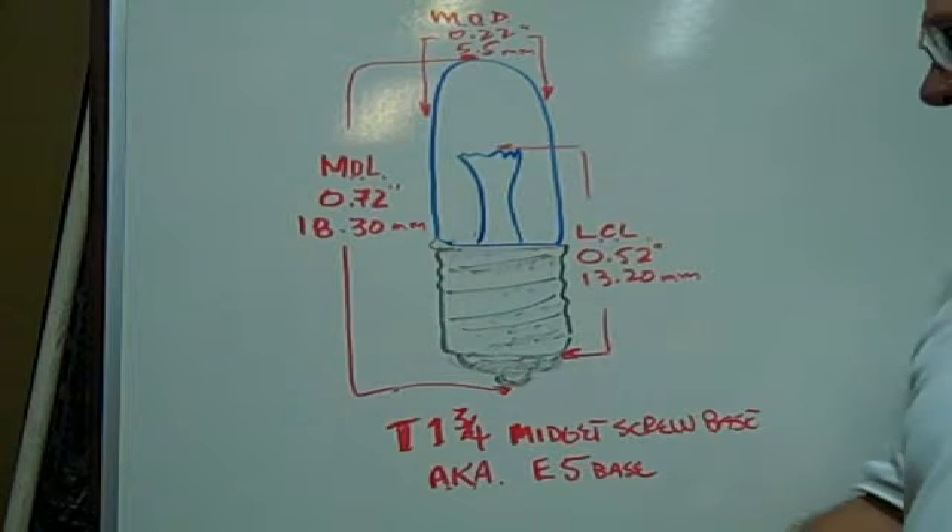The T1 3.25 midget screw base bulb, also known as an E5 base miniature bulb, has a maximum overall length of 0.72 inches or 18.30 millimeters. The maximum outer diameter is 0.22 inches or 5.5 millimeters.